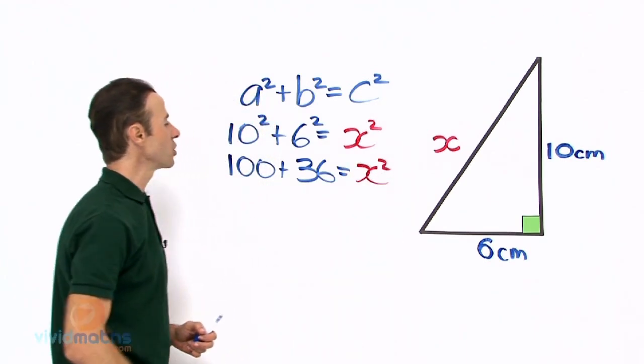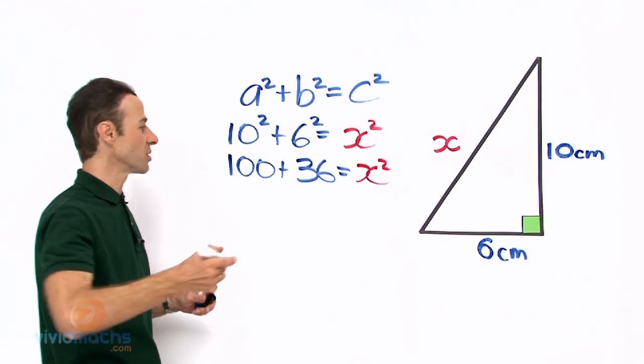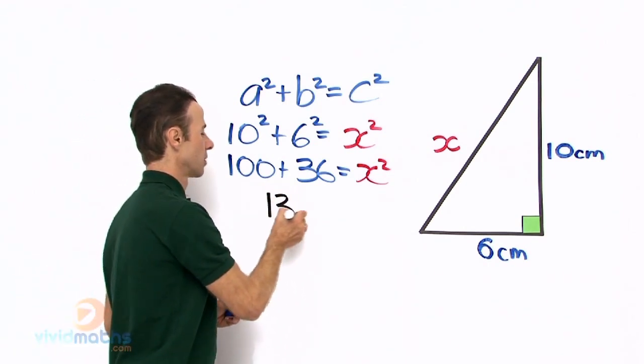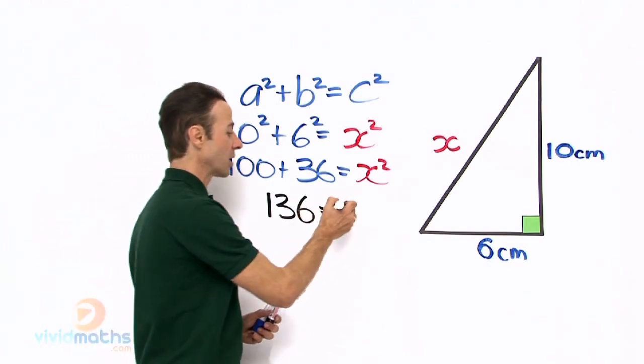Let us add the two numbers. 100 plus 36 yields 136, and that equals the right hand side which is x squared.